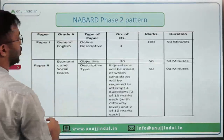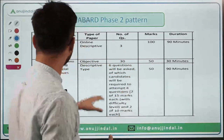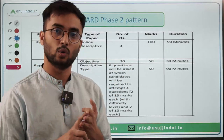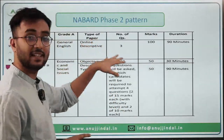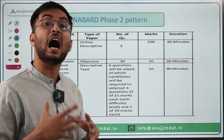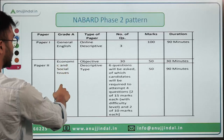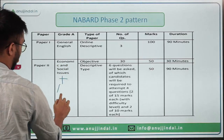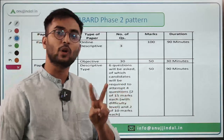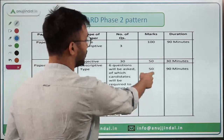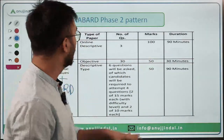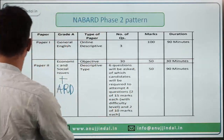Phase 2 is all about subjective and answer writing. The English paper is 100 marks with three questions: essay, précis writing, and letter writing. For ESI and ARD, six questions are given out of which you solve four — two of 15 marks and two of 10 marks, totalling 50 marks. There are also 30 objective questions worth 50 marks. Phase 2 total is 250 marks including a 50-mark interview.